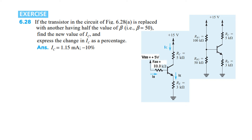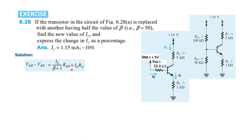Now for Exercise 6.28: if the transistor in the figure is replaced with another having half the value of beta — so beta is now 50 instead of 100 — we find the new value of IC and express the change in IC as a percentage. We note that the Thevenin equivalent circuit remains the same; only beta changes in the equation.